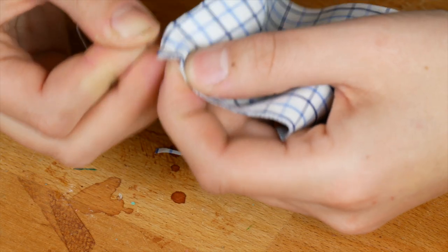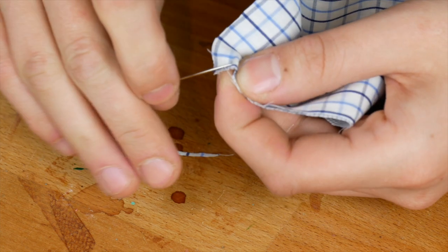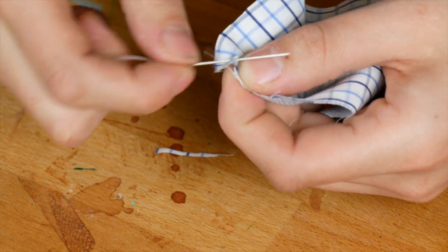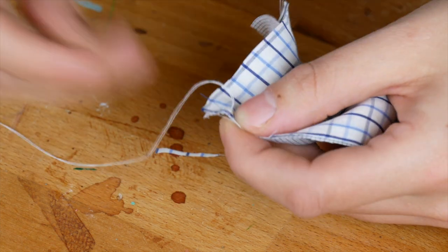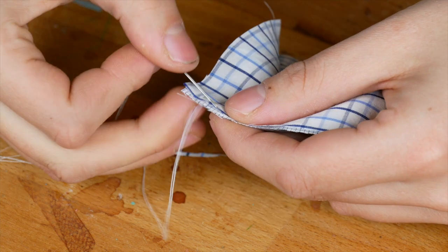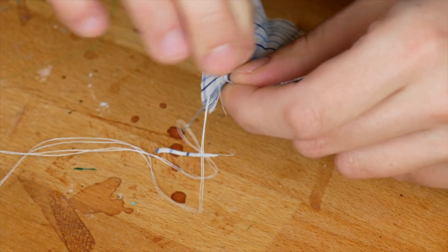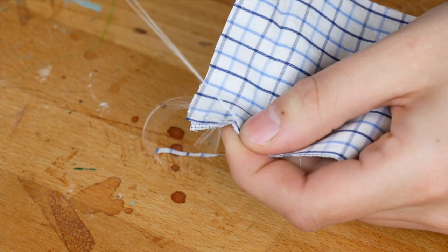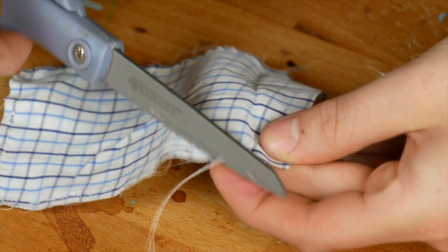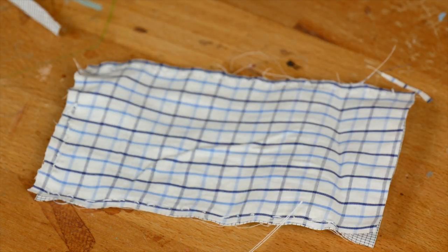Sew the two fabrics together just like the cushion. Once you have closed three sides, fold the blanket inside out again. If you have done that, you can sew the last side.